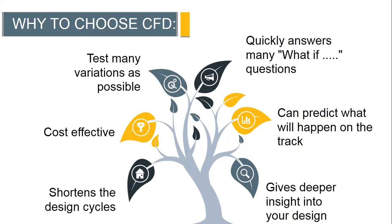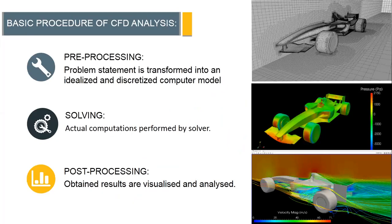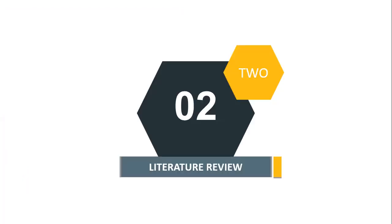The basic procedure of CFD analysis has three steps. First is pre-processing, in which we import the model into the CFD software and assign values to the model. Next is solving, where we assign equations to analyze the model and obtain solutions. Finally, there is post-processing, in which we process the results obtained after the analysis and extract the required data.